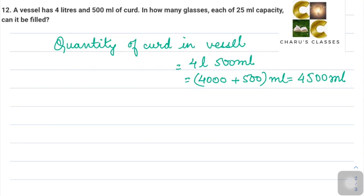The capacity of glass which we have to fill is 25 ml, so capacity of 1 glass is 25 ml. They asked how many glasses can be filled with the total curd, so we have to divide 4500 by 25 to get the answer.